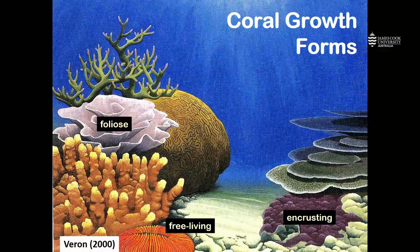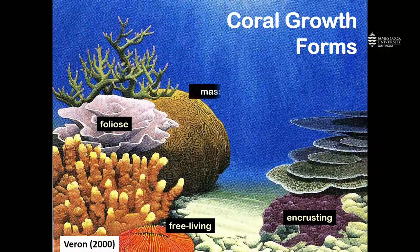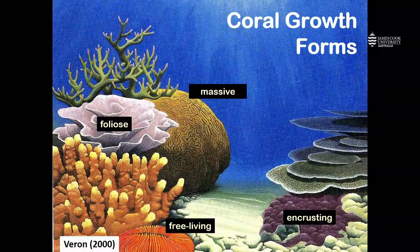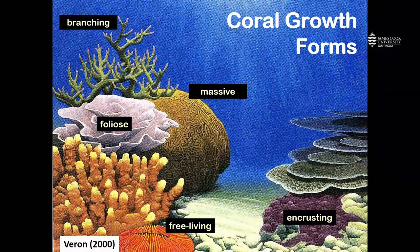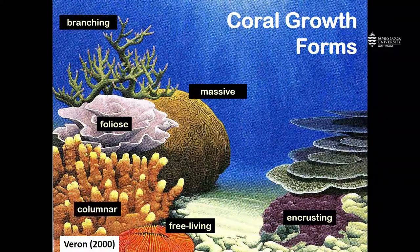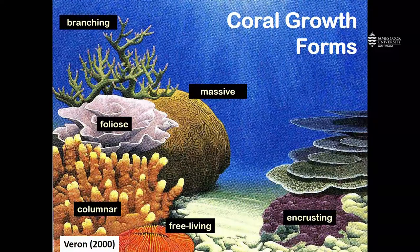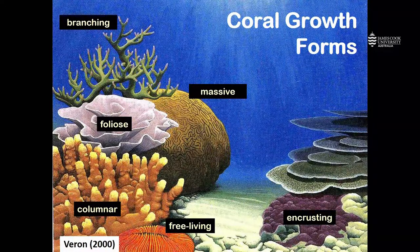We also have free-living corals which aren't attached to the reef, mound-shaped or massive corals with a solid skeleton, branching corals, and columnar corals. We'll go through these different coral morphologies one by one to see how they grow.